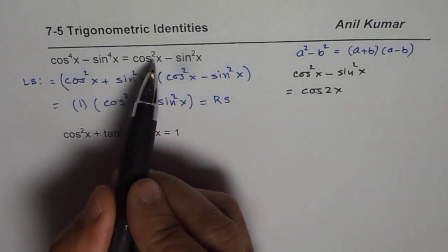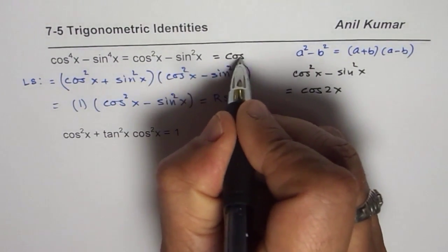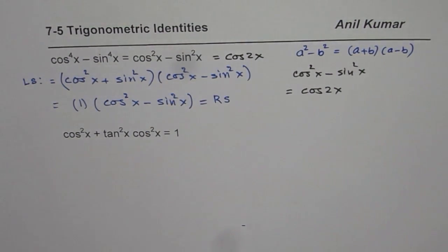In this identity instead of asking that I could have placed cos 2x here. It is still an identity.